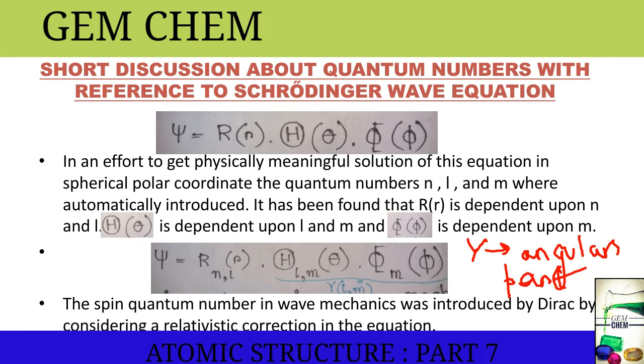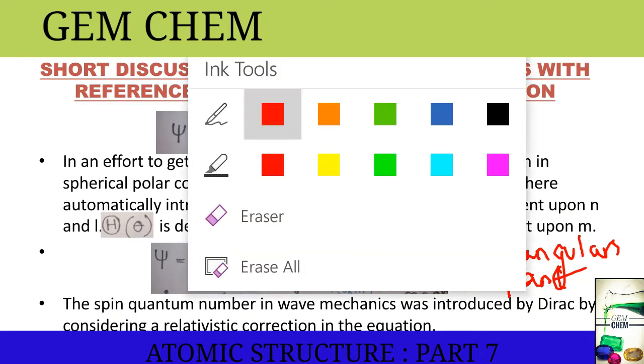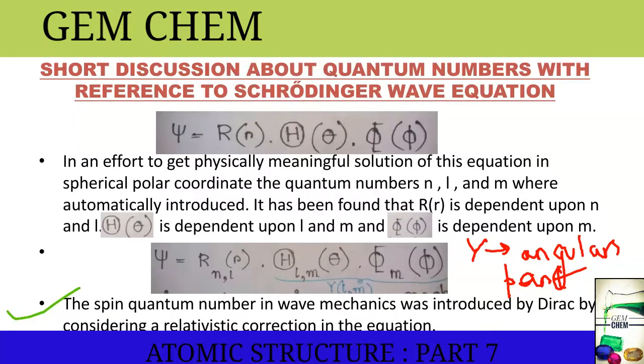The spin quantum number in the wave mechanics was introduced by Dirac by considering a relativistic correction in the equation. But we will not go into the details of spin quantum number. Now, let us see what is Radial Wave Function?